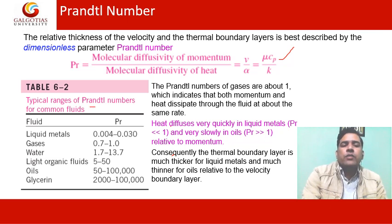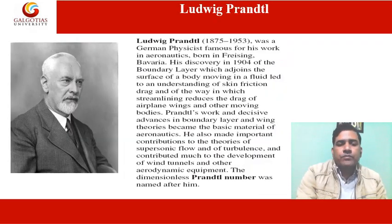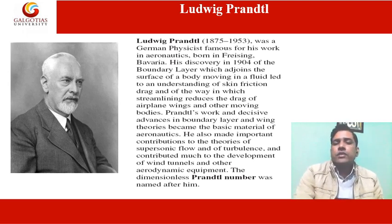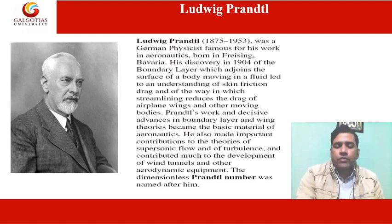The typical ranges of Prandtl numbers for common fluids are as follows: for liquid metals the Prandtl number is very small, for gases it is around 1, for water it is 1.7 to 13.7, for liquid organic fluids it is 5 to 50, and for oils and glycerin the values are much higher. Ludwig Prandtl, a German physicist famous for his work on aeronautics, gave the Prandtl number, which was named after him.